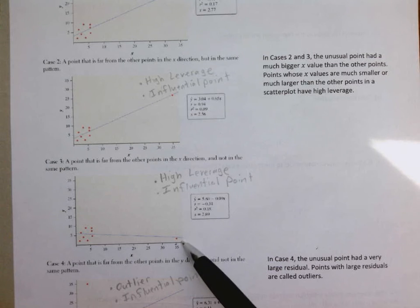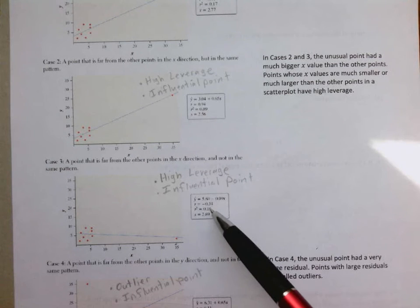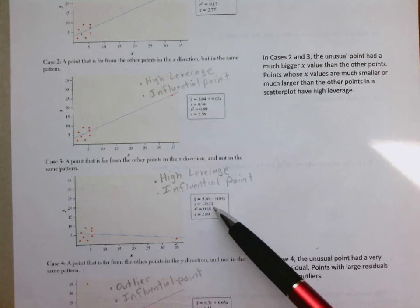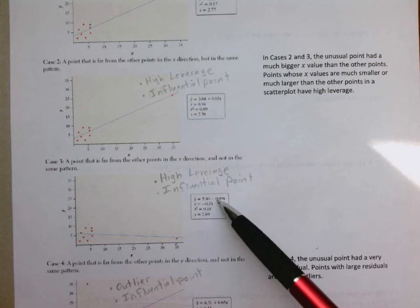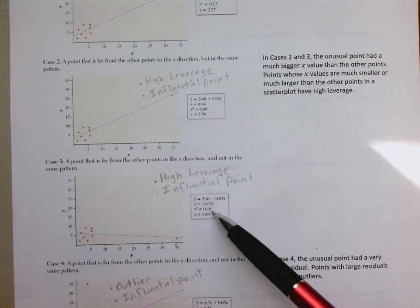This also had a substantial change in R. Instead of being positive like it was for the previous case, we now have a negative. That's associated with the slope. The slope is now negative for this line. Our R squared is not too drastically changed, but the R is.